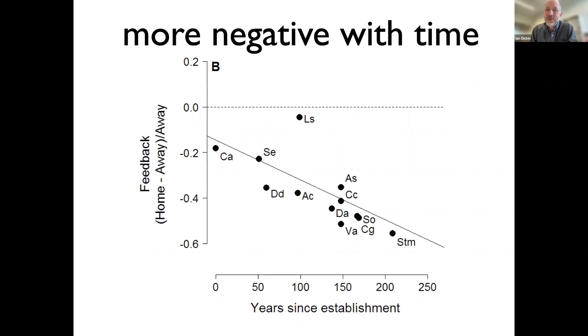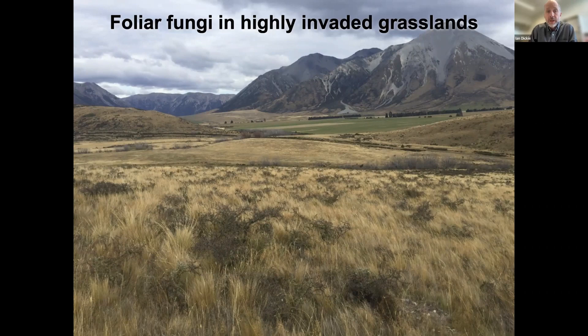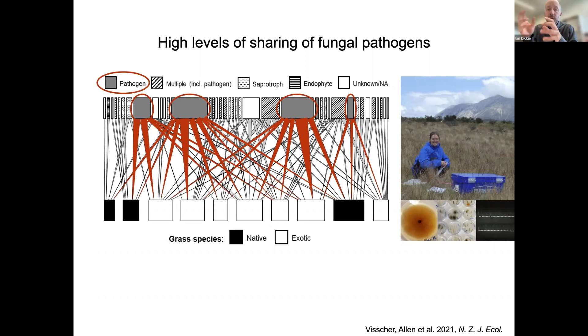Jeff's study was limited because he didn't do any DNA work — it's just a phenomenological study. So we've been looking at various studies examining pathogen communities. I'll highlight one where we went out sampling near Cass, our field research site — a pretty heavily invaded grassland where about 60% of cover is not native. One of my students, Michelle Vischer, and a postdoc, Warwick Allen, went out and sampled grasses across the whole site. There were three native grasses and a wide range of exotic grasses; they took them back to the lab, cultured the fungi, and did Sanger sequencing to identify what fungal species were present.